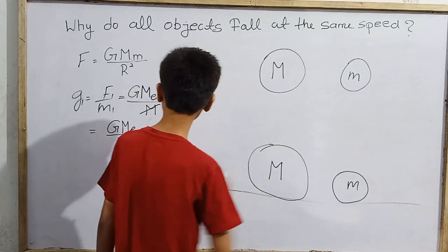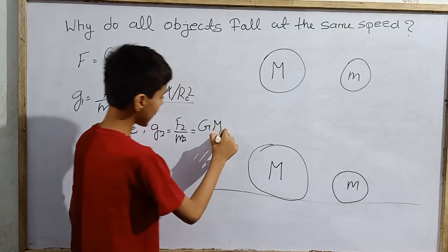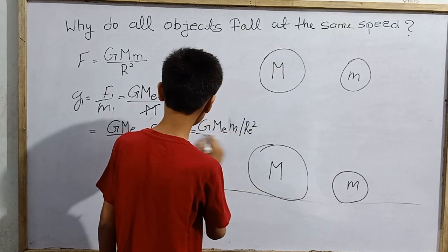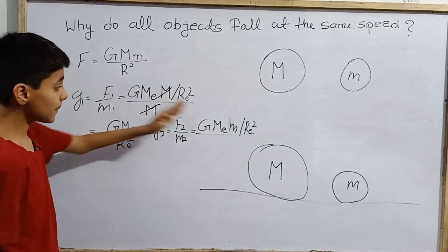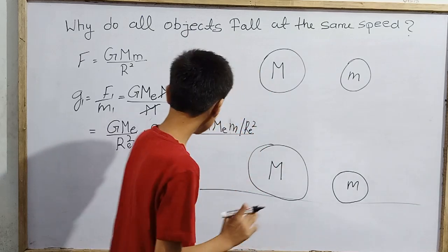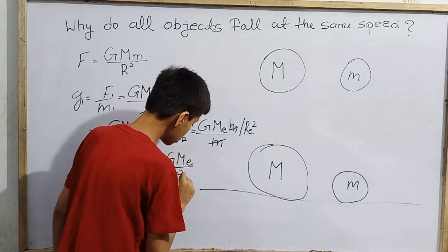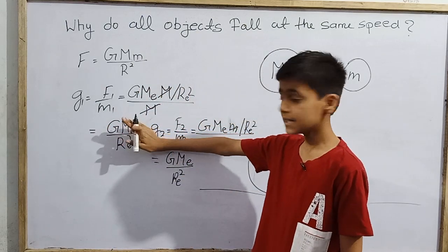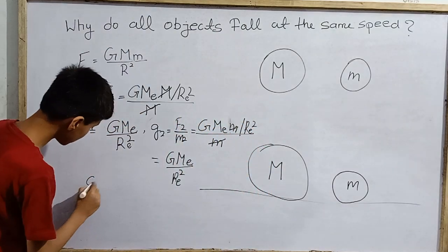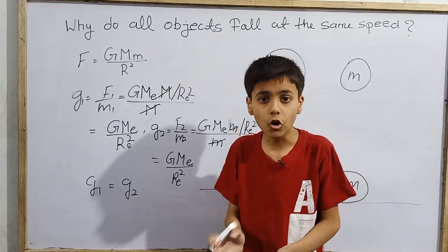For the first body, g₁ = F₁/m₁ = G M_e m / r_e² divided by m, giving G M_e / r_e². For the second body, g₂ = F₂/m₂ = G M_e m / r_e² divided by m, also giving G M_e / r_e². A shocking result: g₁ equals g₂. The gravitational acceleration is the same for both bodies.